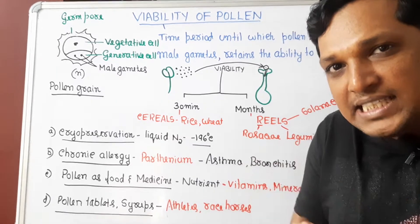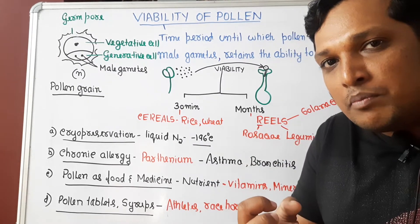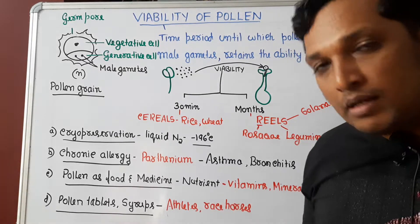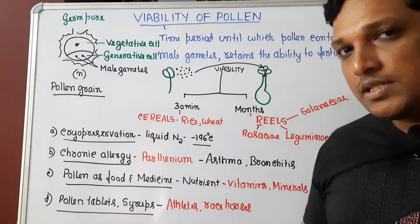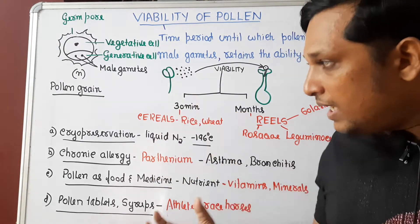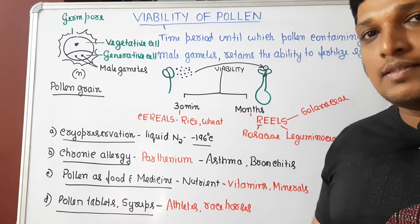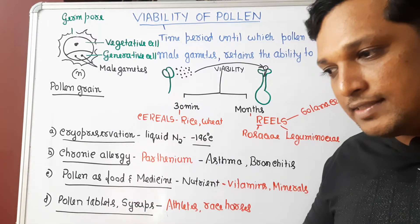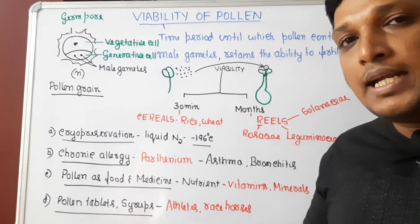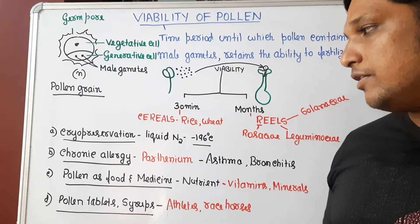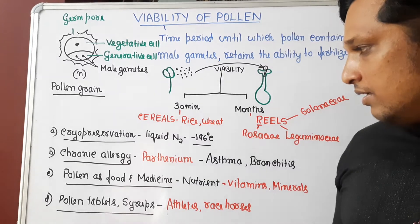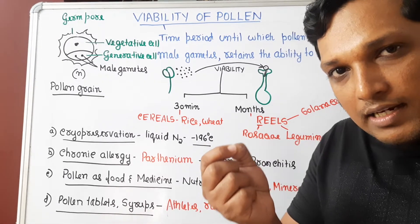Cryopreservation arrests the male gametes from losing their viability. By collecting pollen grains this way, you can create pollen banks. Similarly, seed banks work the same way — seeds are kept in liquid nitrogen, allowing large collections to be preserved. Additionally, pollen grains cause chronic allergies because pollen grains are in micrometers in diameter.